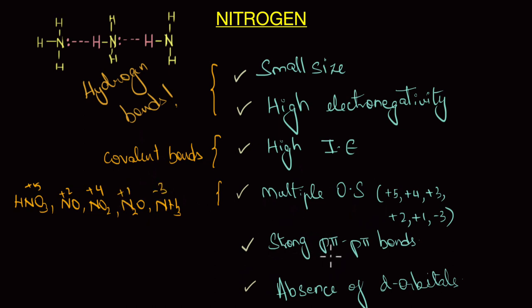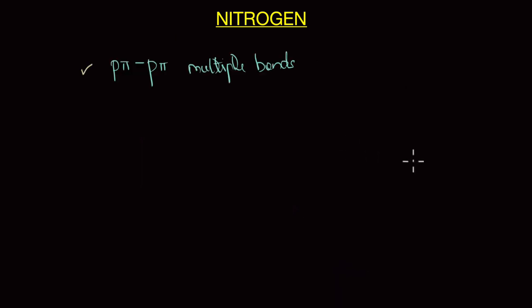So let's now talk about how nitrogen forms strong p pi p pi bonds and how it affects its chemistry. You see, just like carbon of group 14, nitrogen has the unique ability to form p pi p pi bonds with itself and with elements that are similar in size and have high electronegativity, like carbon and oxygen. For example, nitrogen can combine with itself to form diatomic nitrogen molecule, it can combine with carbon to form cyanide ion,